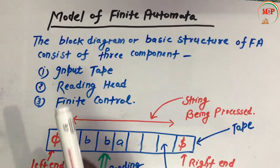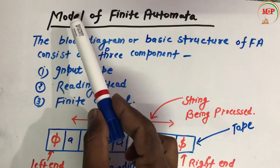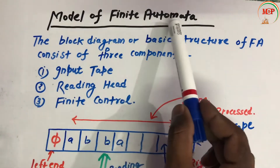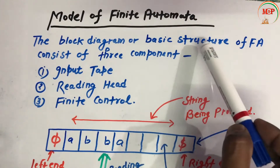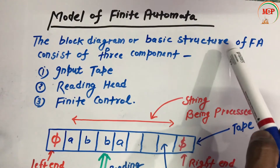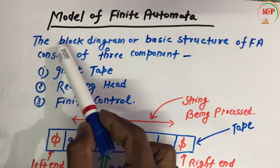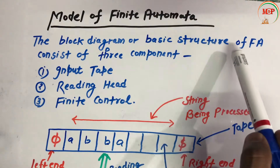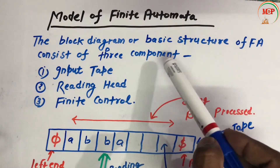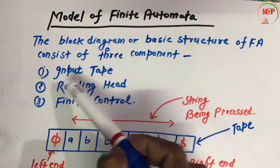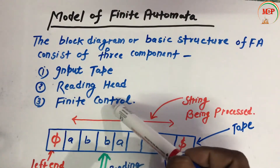Hello friends, in this video we are going to study about the model of finite automata, or the block diagram of finite automata, or the basic structure of finite automata. The basic structure of finite automata consists of three components: first is input tape, second is reading head, third is finite control.